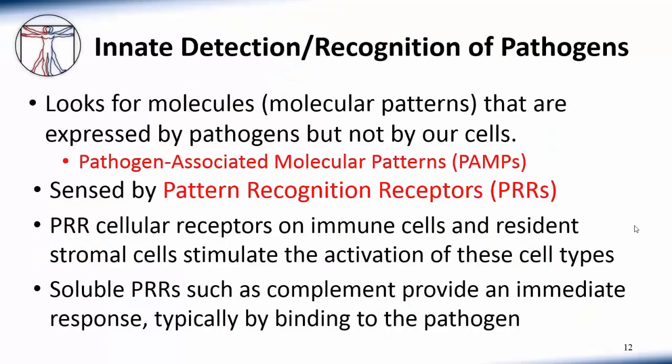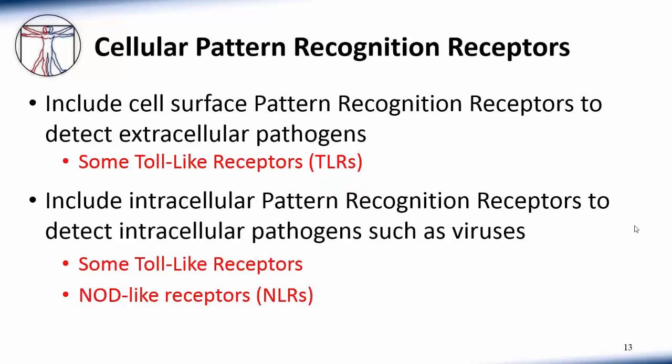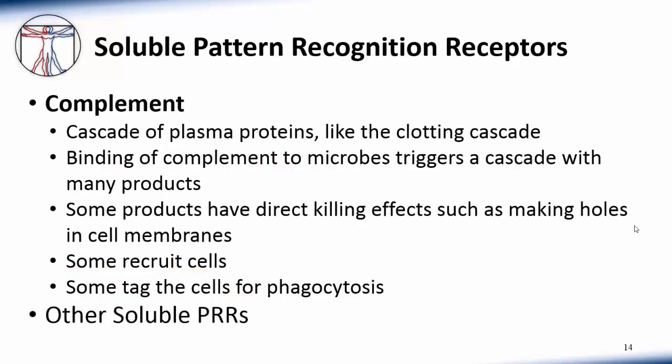So how does the immune system detect pathogens? Primarily, it looks for molecules that are made by pathogens but not by us. These pathogen-associated molecular patterns come in various forms and are danger signals detected by what we call pattern recognition receptors. These can be receptors that activate cells or soluble molecules with immediate activities. Cellular pattern recognition receptors include cell surface receptors that recognize extracellular pathogens or intracellular receptors activated when cells are infected. There are also soluble pattern recognition receptors — the major example is complement, a cascade of plasma proteins much like the clotting cascade. Binding of complement to microbes triggers a cascade whose products can directly kill cells by making holes in membranes, recruit other cells, or tag cells for phagocytosis.